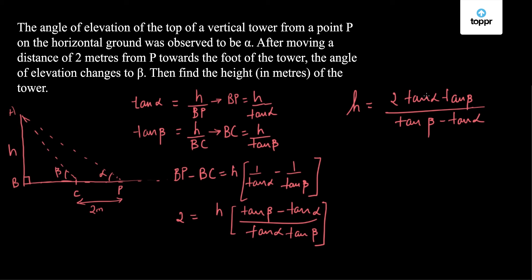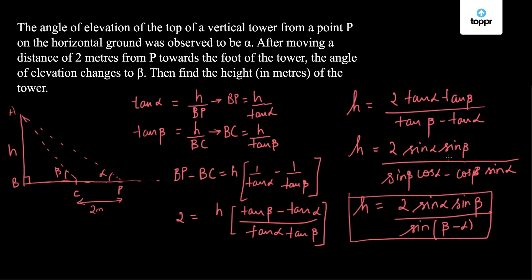To simplify further, we will write tan alpha as sin alpha by cos alpha and tan beta as sin beta by cos beta. So we will end up with 2 sin alpha sin beta upon (sin beta cos alpha minus cos beta sin alpha). This is the expansion for sin of (beta minus alpha). So H will be written as 2 sin alpha sin beta upon sin(beta minus alpha). This is my final answer for the height of tower AB.